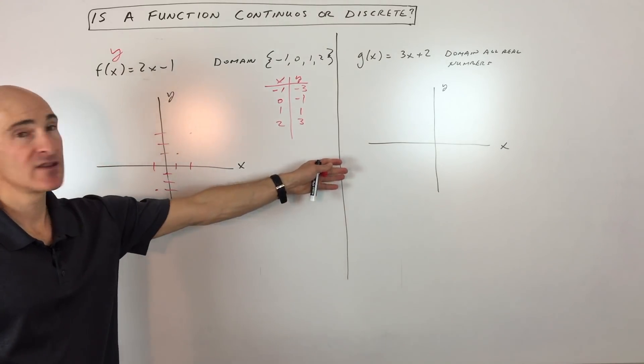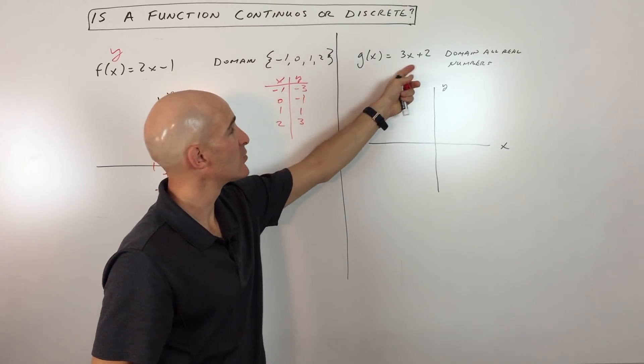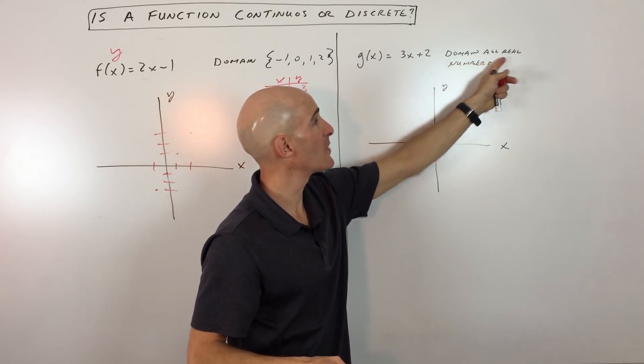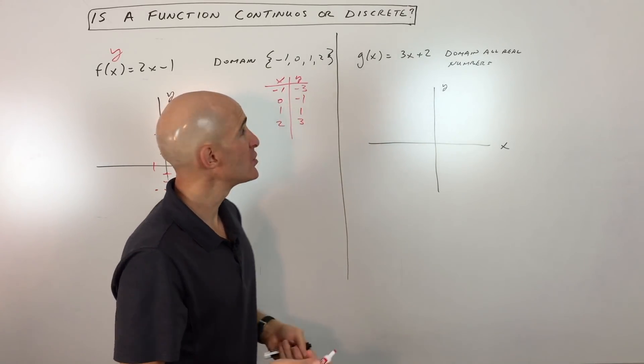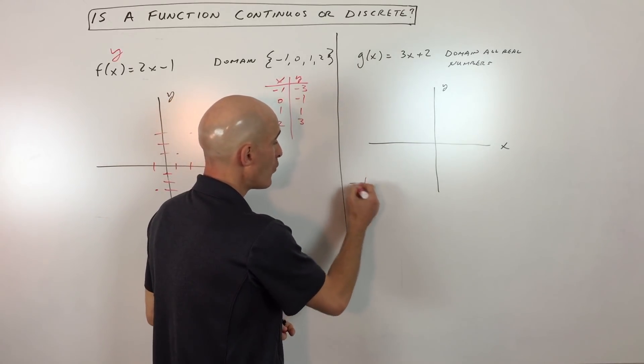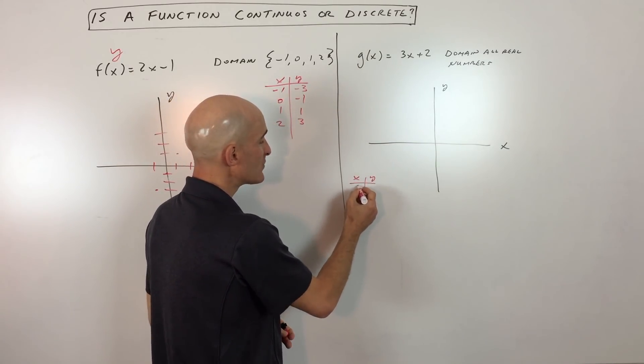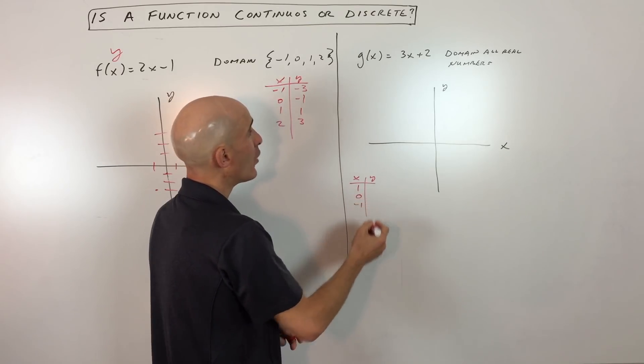Okay, now let's go over to the second example here. G of x equals 3x plus 2, but now it says the domain is all real numbers. So that means that x can be anything. So what we're going to do is we can make a table again, just x and y table. We'll just pick some values like maybe 1, 0, and negative 1.